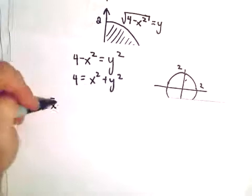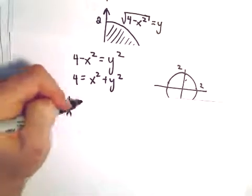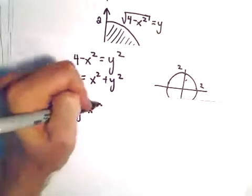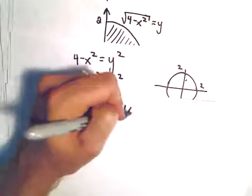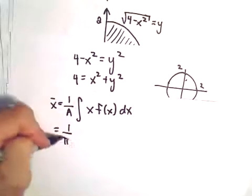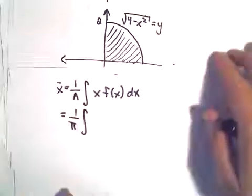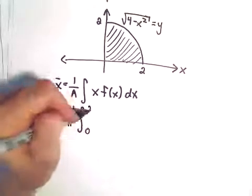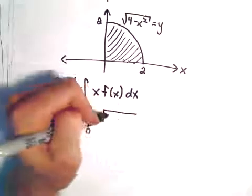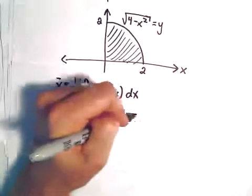So x bar is going to equal 1 over the area. And then we have the integral x times f of x dx. So in this case, we'll get 1 over pi. We'll have the integral from 0 to 2 of x times the function square root of 4 minus x squared dx.